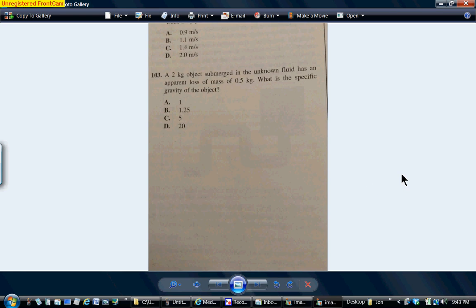It says that a two kilogram object is submerged in an unknown fluid. It doesn't say this here, but the unknown fluid has a specific gravity of five. And the two kilogram object has an apparent loss of mass of 0.5 kilograms. The question is, what is the specific gravity of the object?